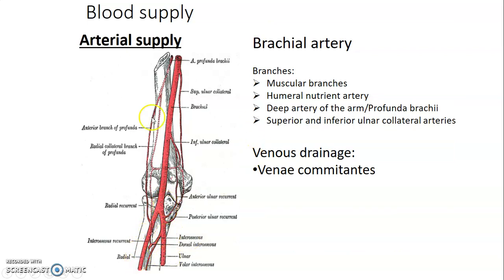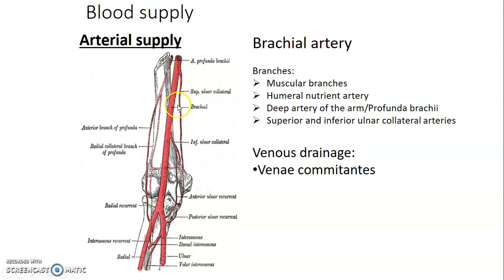In this image you can see the radial and ulnar arteries, and the elbow anastomosis. This is your brachial artery. What are the branches? We have done origin and termination. The branches of the brachial artery are: superior ulnar collateral, inferior ulnar collateral, profunda brachii (the deep artery of the arm), muscular branches to the muscles, and a nutrient artery to the humerus.